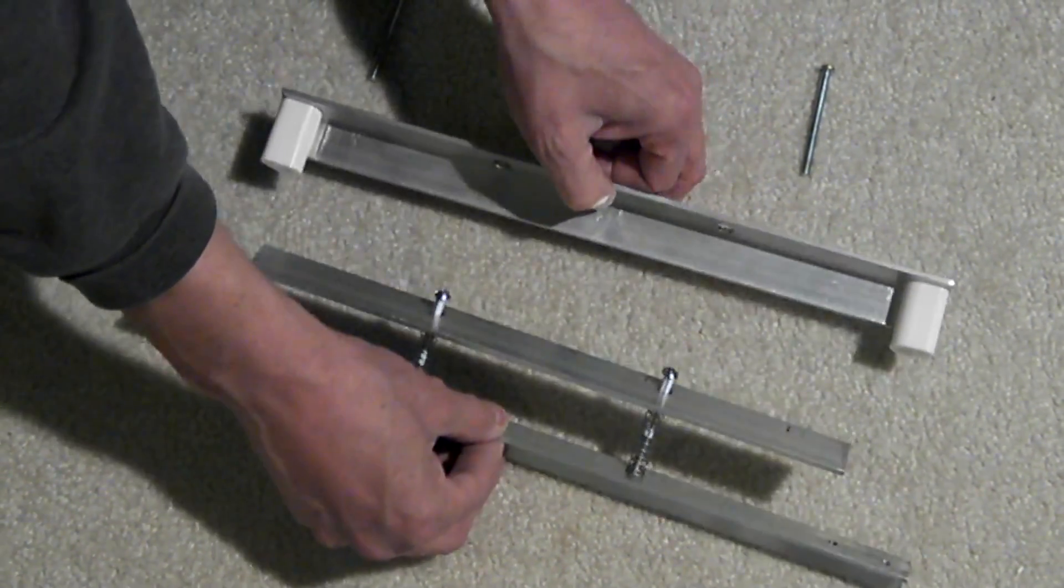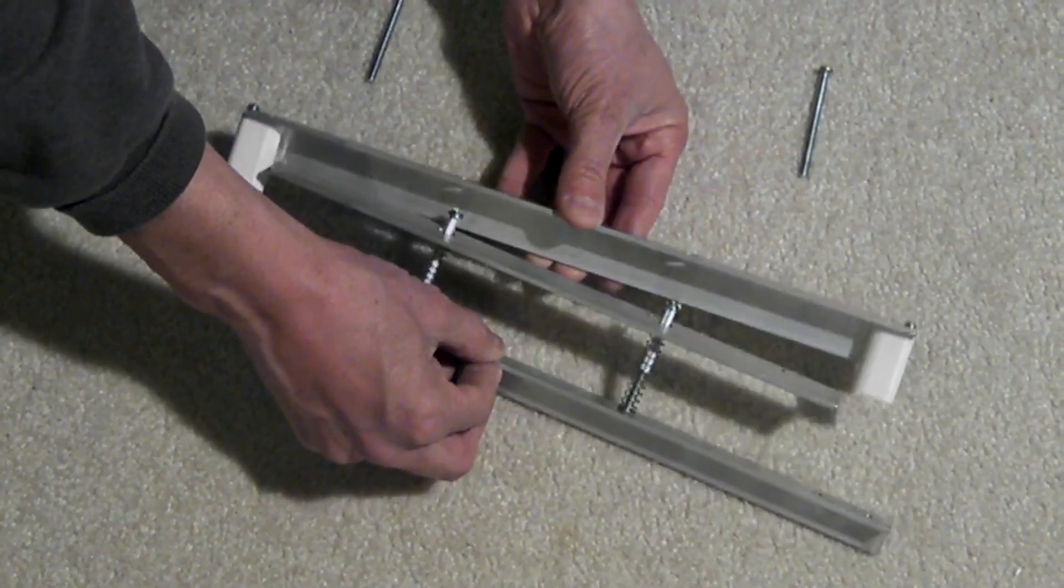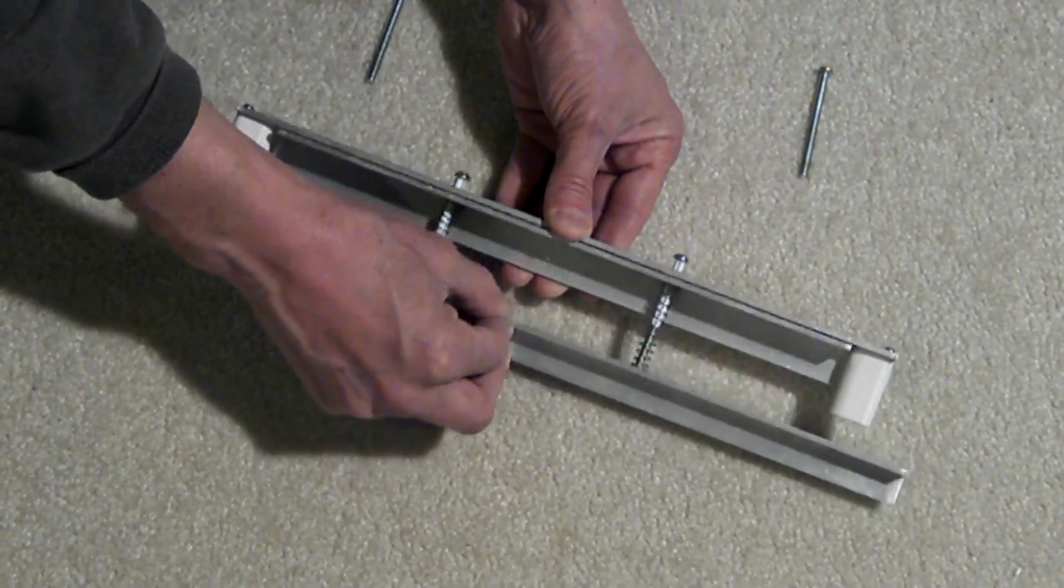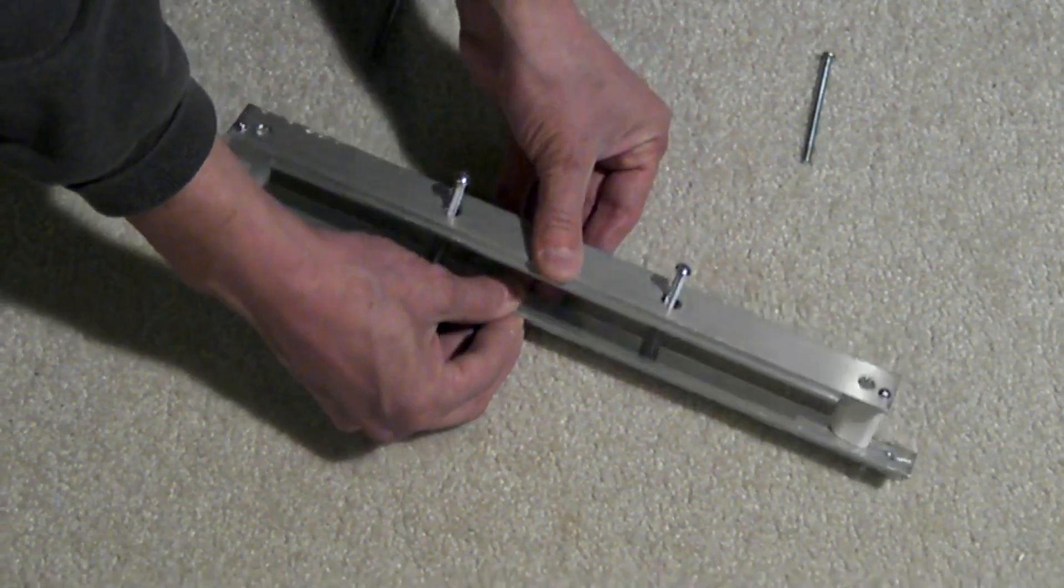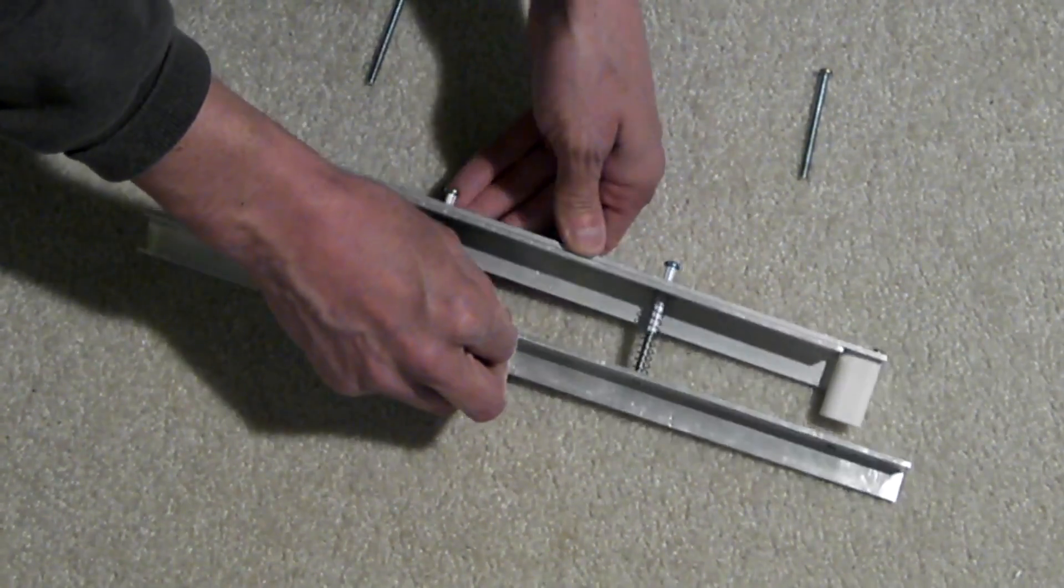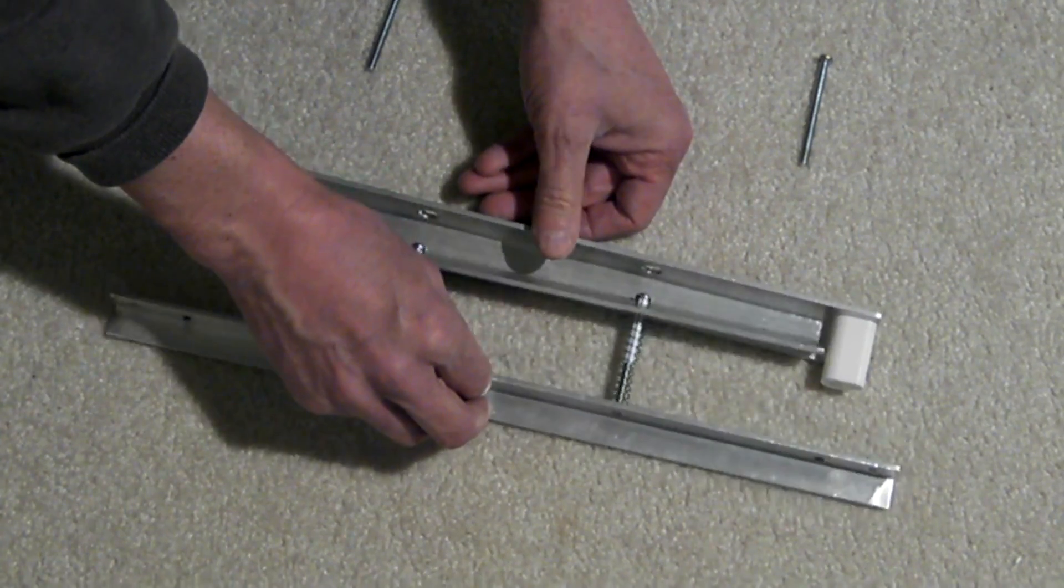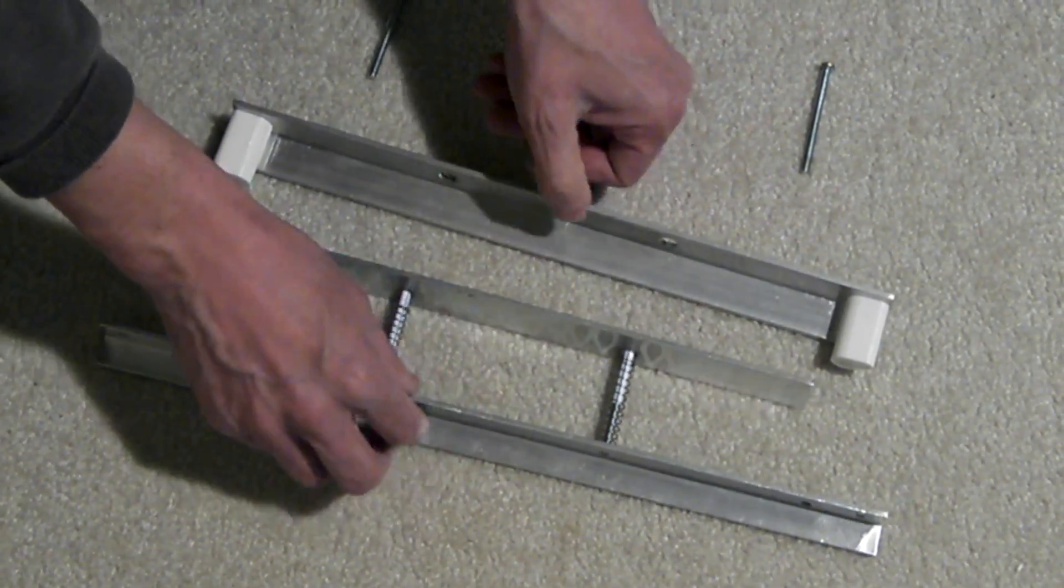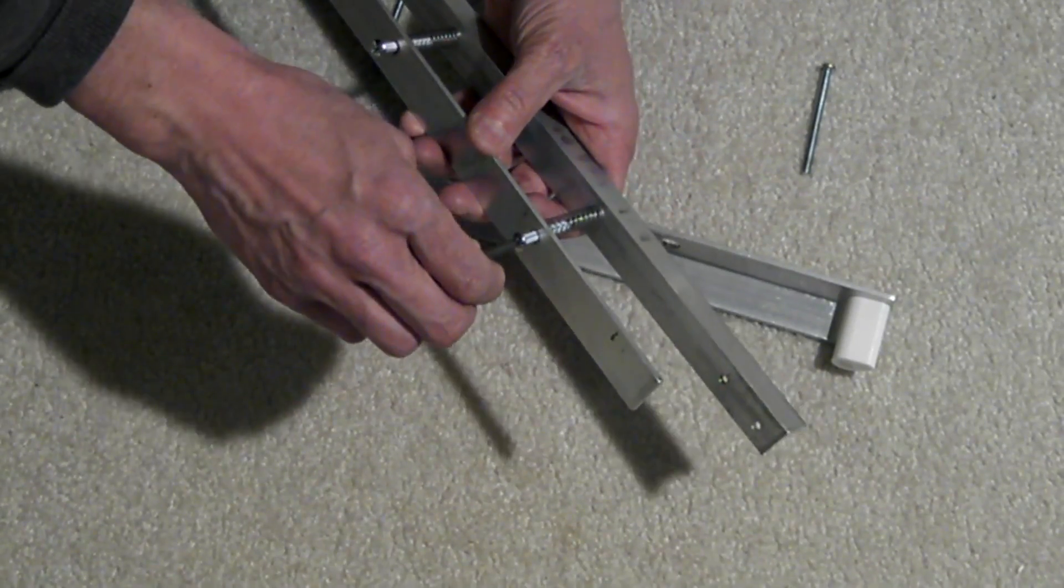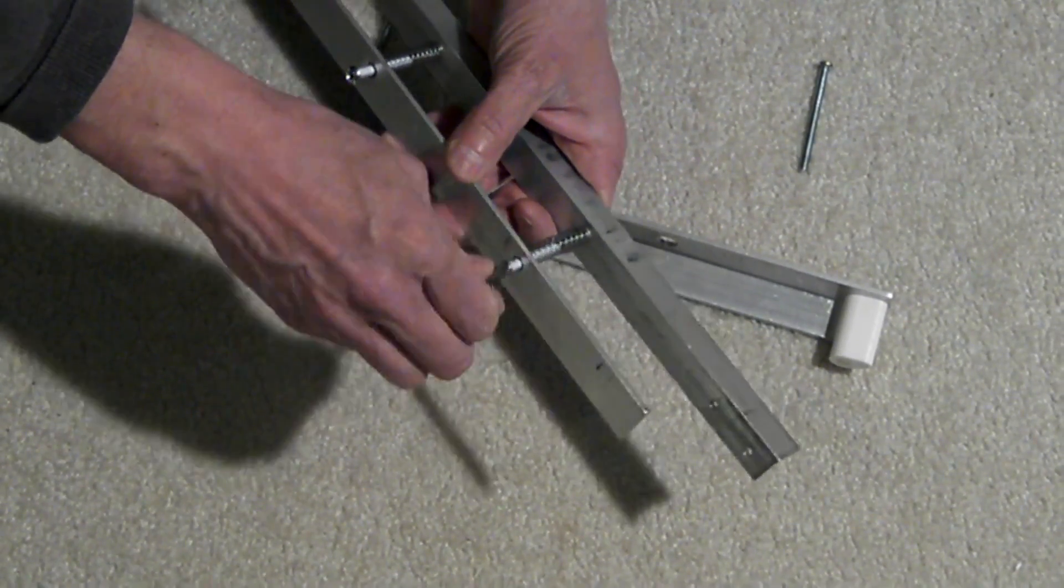And here we can see that goes together. And one thing to note is those fastener heads will go right through that top bar, there's clearance there. So what we can do is bring those down where we need them to be.